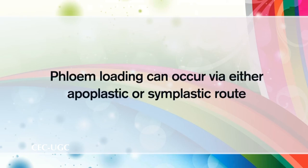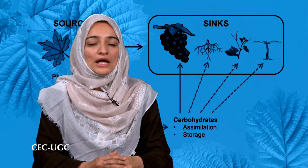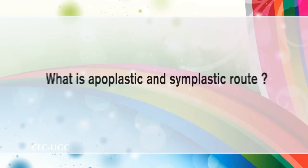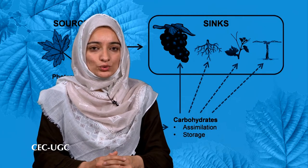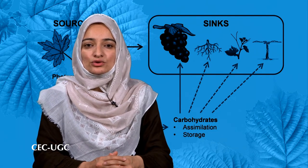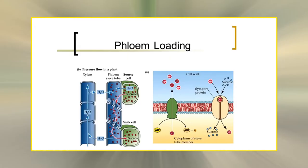Phloem loading can occur via either apoplastic or symplastic routes. In many plant species like Arabidopsis, potato, and tobacco, the apoplastic route is preferred for sucrose loading into the phloem. In the apoplastic route, sucrose is released into the extracellular space in the vicinity of the phloem, from where it diffuses via the cell wall. In the symplastic type of phloem loading, sucrose is assumed to diffuse from cell to cell via plasmodesmata and is finally released into the sieve element and companion cell complex.